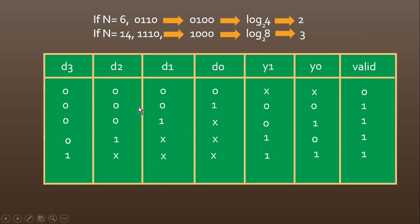The last case, when d3 is 0, d2 is 0, d1 is 0, d0 is 1, then my output will be 00. Because this number is 1, which is 2^0, so log₂ 2^0 is 0.